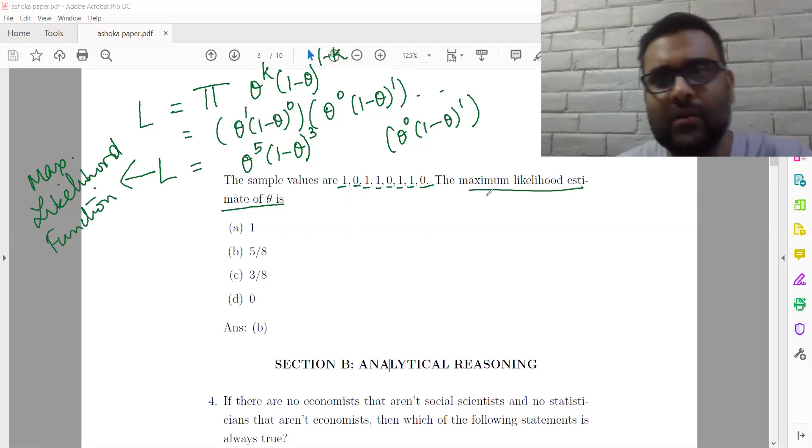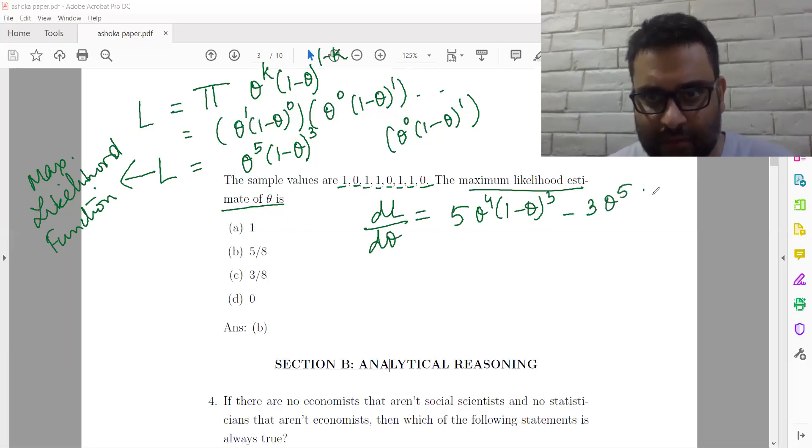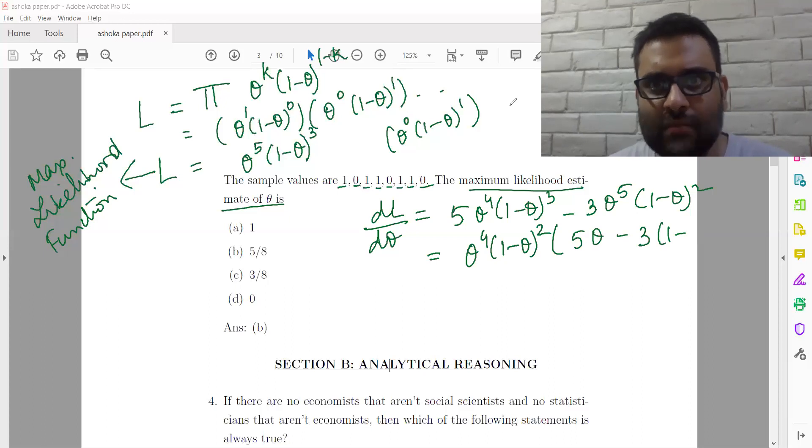And in order to find out the maximum likelihood estimate, we need to differentiate this. So, we get DL d theta will be 5 theta to the power 4, 1 minus theta cube, minus 3 theta to the power 5, 1 minus theta square. Chain rule, basically. U into V. So, theta to the power 4, 1 minus theta square, we can take it as common. We get 5 theta minus 3 into 1 minus theta. Sorry, 5 into 1 minus theta. 1 minus theta minus 3 theta is equal to 0 as the first order condition.